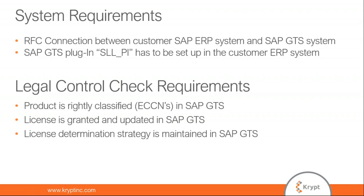The system requirements include an RFC connection between the ERP and GTS system. The GTS plugin — SLLPA — is set up in the ERP system. CryptConnect, our proprietary product, helps connect a non-SAP system with the GTS system. For legal control checks, the product must be correctly classified in GTS, the license granted by the federal agency must be updated in SAP GTS, and the license determination strategy must be maintained in SAP GTS.